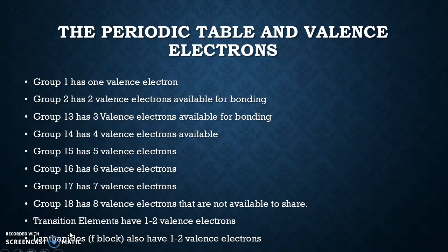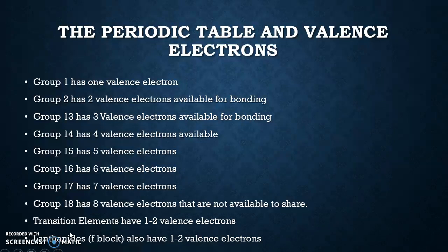Based on your periodic table, it tells you how many valence electrons are available. Group 1 — the alkali metals — has one valence electron. Group 2 has two. Group 13, after passing through all the transition metals, has three valence electrons. Group 14 has four, group 15 has five, group 16 has six, group 17 has seven, and group 18 has eight — but those are not available to share because that satisfies the octet rule; they have all they need and they're not reactive.